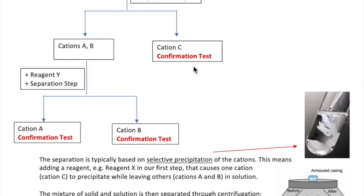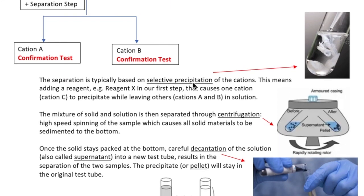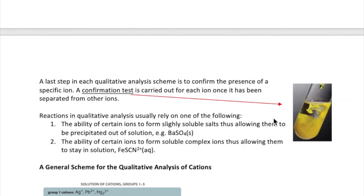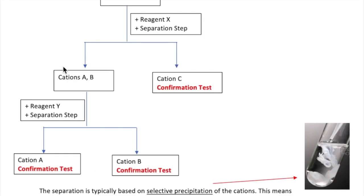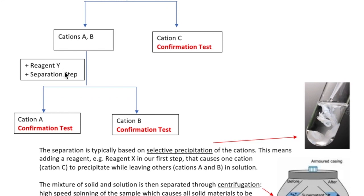In our scheme, we now have cation C separated from A and B. So that allows us to perform a specific confirmation test on cation C. Here we show that cation C forms a yellow precipitate in its confirmation test. We must further separate out cations A and B, in this case by adding reagent Y, which will selectively precipitate one of the cations. Then, once we centrifuge to separate the supernatant from the pellet, we can carry out the confirmation tests for each ion.